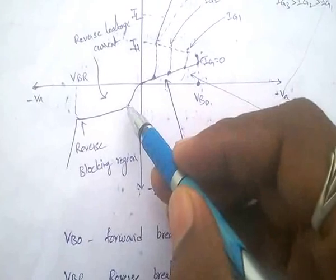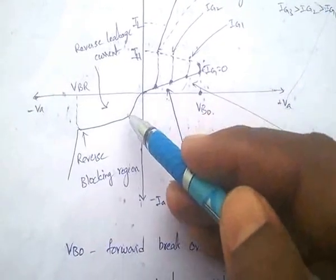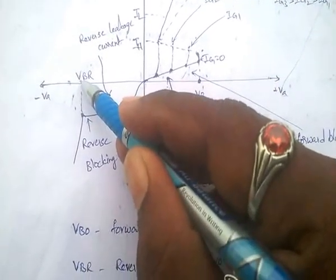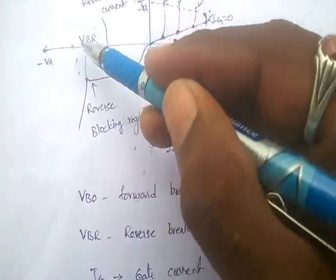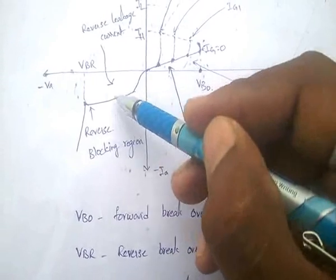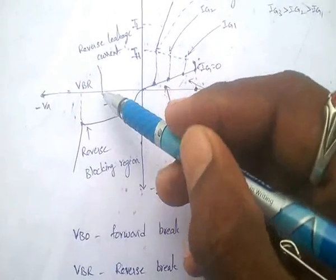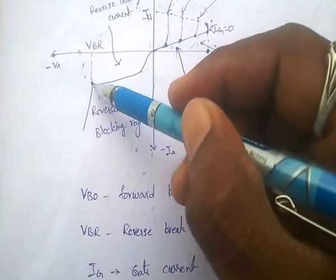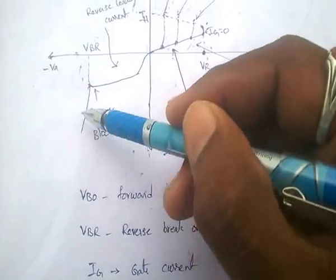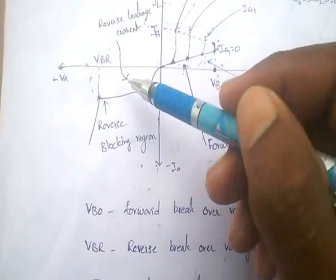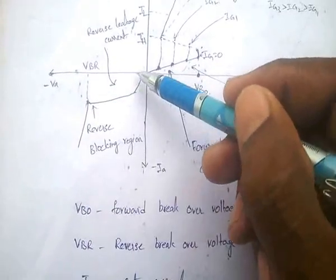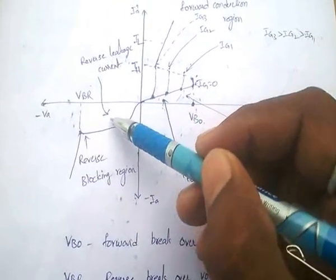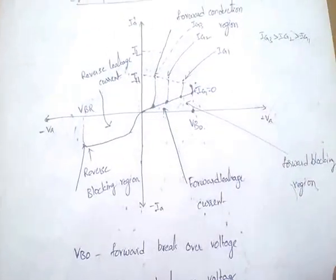In reverse bias, up to the reverse break-over voltage (VBR), a small reverse leakage current flows. After the reverse break-over voltage is reached, the device breaks over and starts conducting. That region is called the reverse blocking region, and the current is called reverse leakage current.